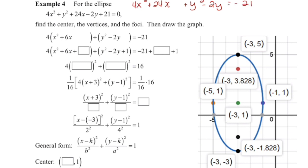Looking at my x values, they are divisible by positive 4. So when I divide them by 4, I'll have x squared plus 6x. There's nothing I can do with y squared minus 2y, so I'm leaving it as is. Now we need to take positive 6 to complete the square — divided by 2 and squared, this gives me 3 squared, which is 9. This 3 is what we'll need when we factor. So this gives me 9 here. However, I'm going to need to take 4 times 9, which is 36, and add it to the right side because we factored out that 4 to begin with.